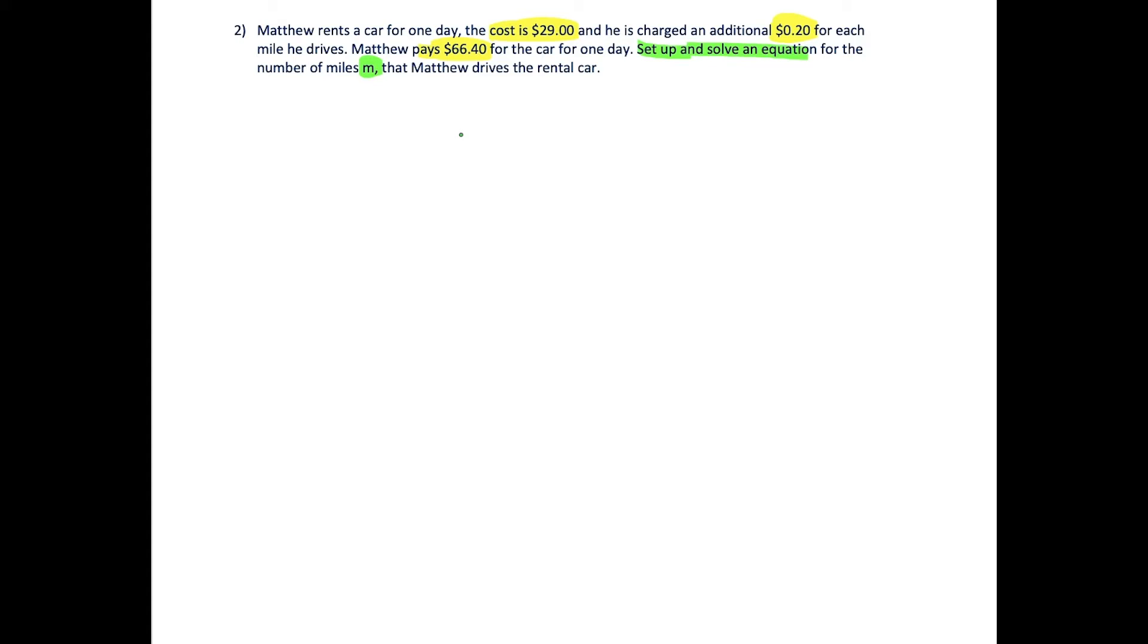To solve this, we distinguish that $29 is a fixed amount and $0.20 is the rate per mile. In the linear equation, this represents the slope. We set up our equation as $0.20 times M, where M represents the number of miles, plus the fixed charge of $29.